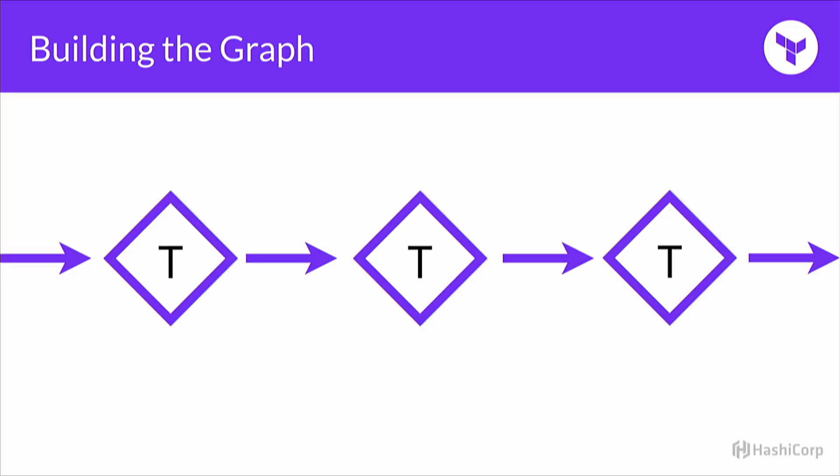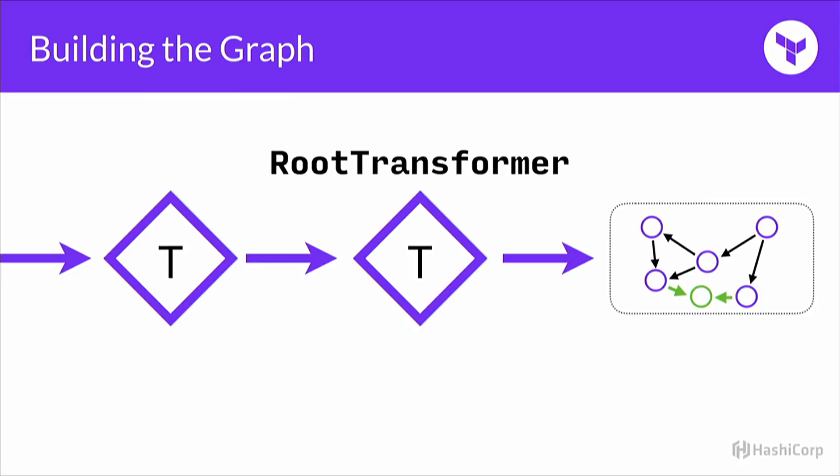There are probably 25 or 30 transforms. Each of them has a really isolated job, making it very easy to test. Some of the transforms modify the graph to understand where destroys are going to happen — you have to put a destroy node earlier than a create node. What's nice is they all have this exact same interface: graph goes in, graph comes out, usually slightly differently. At the very end we have the root transformer, which just makes sure there's a single place to start our walks. If there are any nodes that don't have any dependents, we add one node and point it to those.